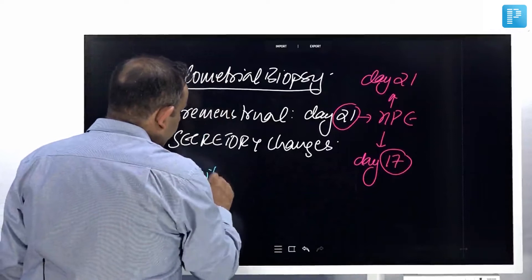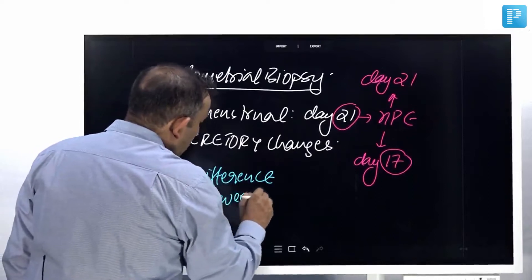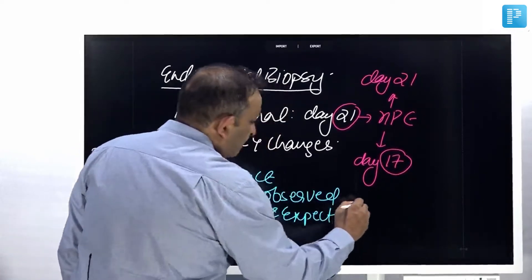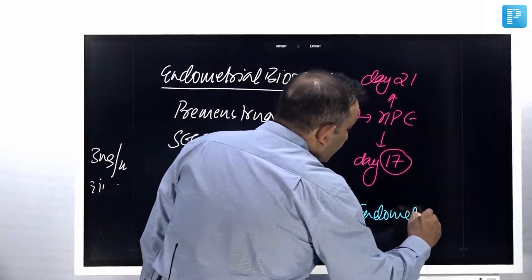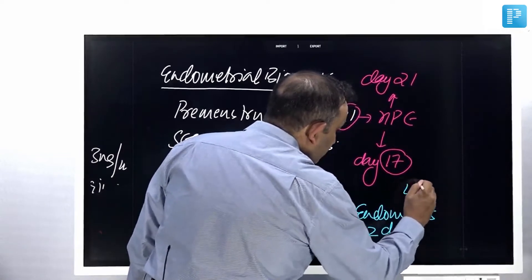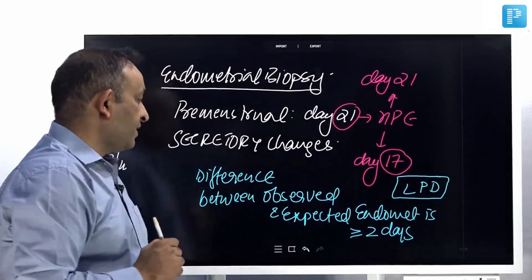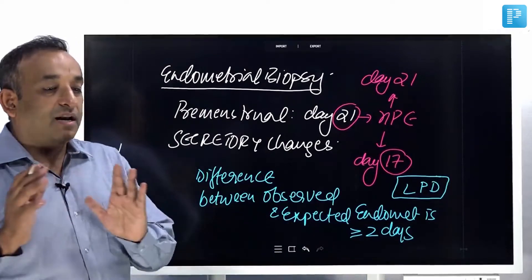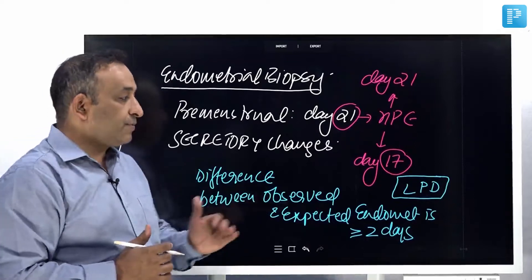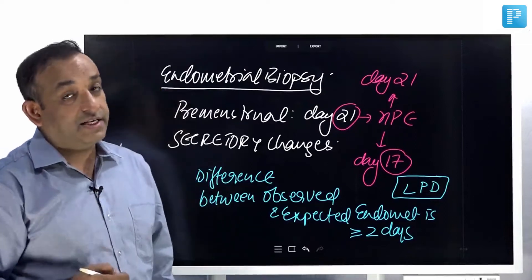When the difference between observed and expected endometrial changes is more than or equal to 2 days, I call it a luteal phase defect. When the observed changes are lagging 2 or more days behind the expected changes, that means the patient has ovulated, but the progesterone formed is not appropriate. A luteal phase defect is a well-recognized cause of infertility.